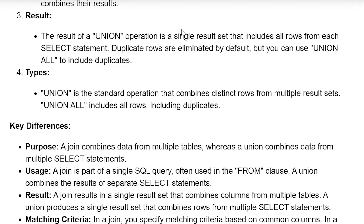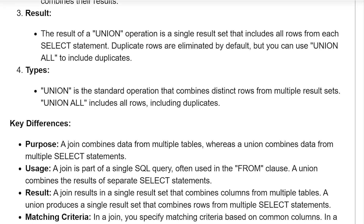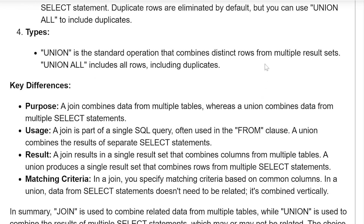Regarding types: union is a standard operation that combines distinct rows from multiple result sets, while UNION ALL includes all rows, including duplicates.